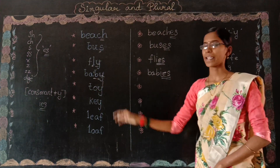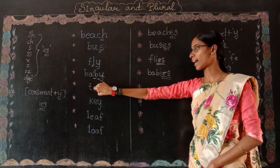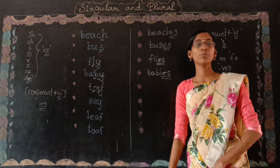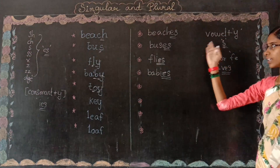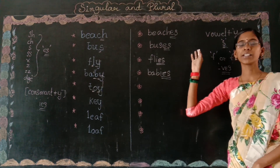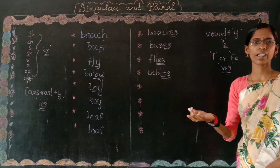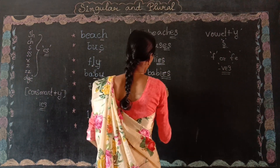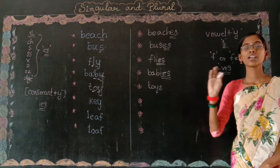See the next word: 'toy.' We play with toy. It ends with Y, and before the Y is O, which is a vowel. So here we apply our third rule — when a noun ends with vowel plus Y, just add S without removing anything. Toy plus S gives us 'toys.' In singular we say toy, and in plural we say toys.